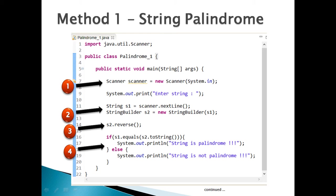Create a StringBuilder object s2 by passing the newly created string s1 to it. The StringBuilder class has a method called reverse(), which reverses the string passed to it. For example, if s1 is 'sports', the reverse method converts it to 'strops'.